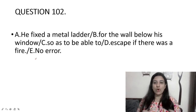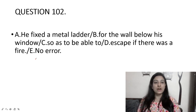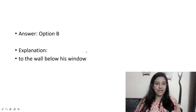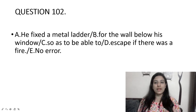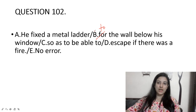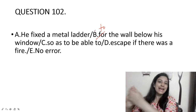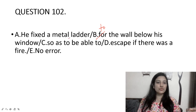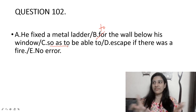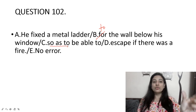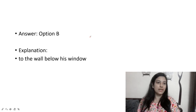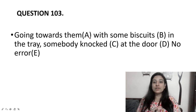He fixed a metal ladder for the wall below his window so as to be able to escape if there was a fire. You don't 'fix for' something — you 'fix to' something. So it should be 'he fixed a metal ladder to the wall.' 'So as to' means 'in order to,' so he could escape if there was a fire.